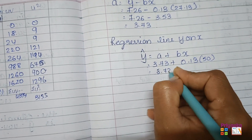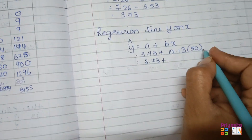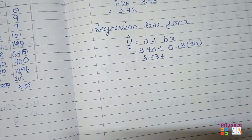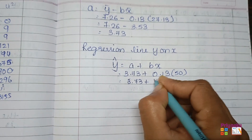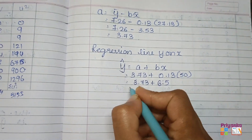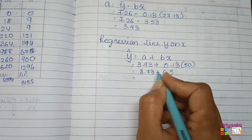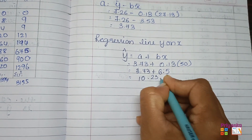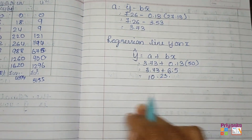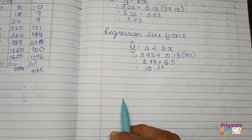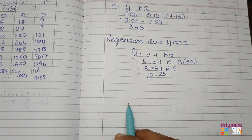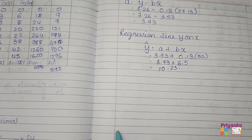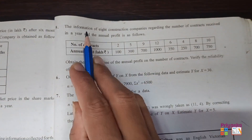So: 3.73 plus b multiplied by X — you will get 6.5 (not 65). Add them together and you will get 10.23. At the end, don't forget to write: hence, the estimated sales Y obtained is 10.23 crores.